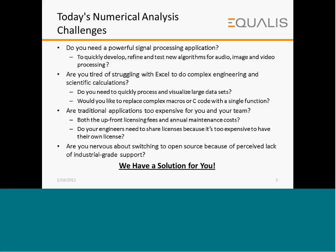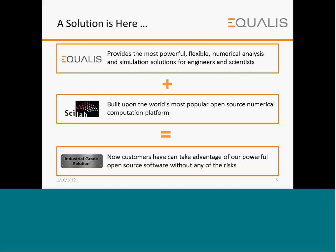You may need a single function to replace complex macros or C code. Some traditional applications may be too expensive with all the upfront licensing fees and annual maintenance costs. There is also a perceived lack of industrial-grade support when switching to open-source software. Now, we have a solution for all your needs. Equalist, along with SciLab, provides an industrial-grade solution built upon SciLab, the world's most popular open-source numerical computation platform, allowing customers to take advantage of powerful open-source software without any of the risks.